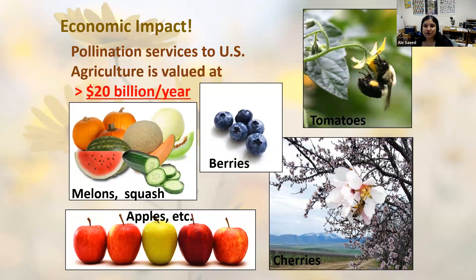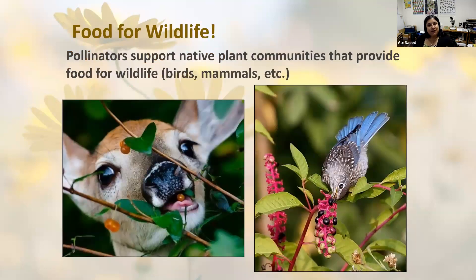In addition to food for us, pollinators also have a huge economic impact for our agricultural operations in the United States, with pollination services in U.S. agriculture valued at over $20 billion a year. A lot of our staple crops are really reliant on bee pollinators. On top of that, native bees themselves produce over $3 billion annually to U.S. agriculture alone, though those numbers are likely underestimated based on our limited understanding of native bee impact in agricultural operations.